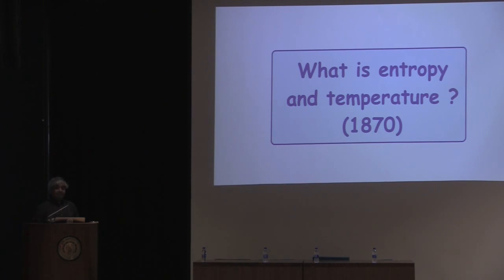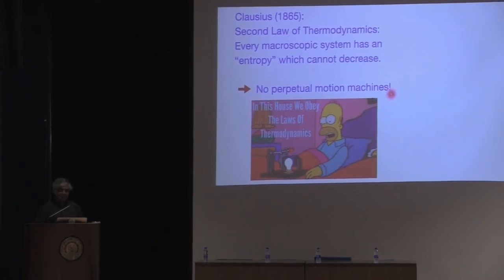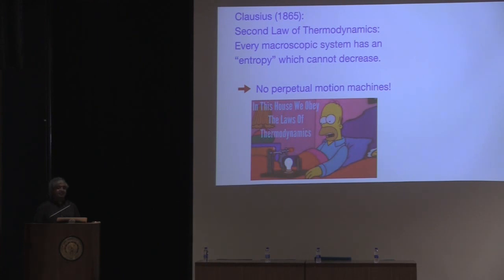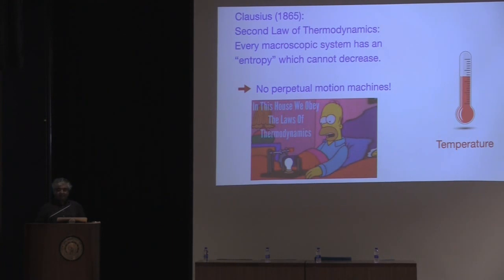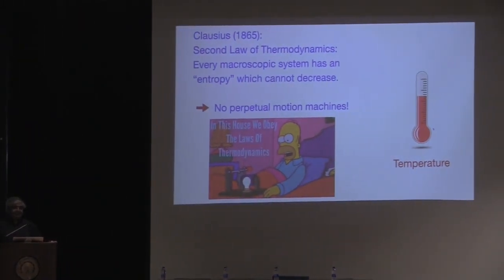The first concept is entropy and temperature, which play a central role in the subsequent discussion. Entropy and temperature were discovered as concepts by engineers trying to build engines. In 1865, Clausius formulated the second law of thermodynamics, which basically said there are no perpetual motion machines. What Clausius said is that every object has a quantity called entropy, and this entropy must always increase — implying no perpetual motion machines. Temperature was also a somewhat arbitrary concept, measured on some scale like mercury heating up in degrees Celsius or Fahrenheit.